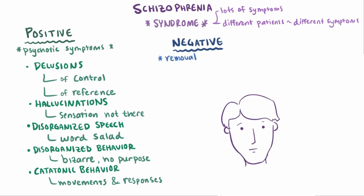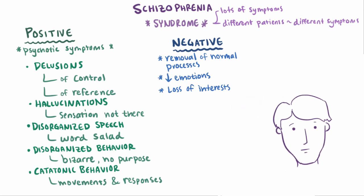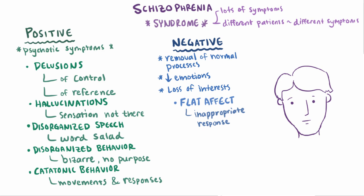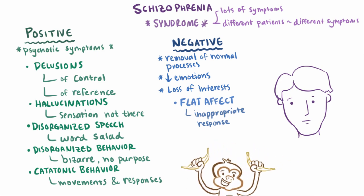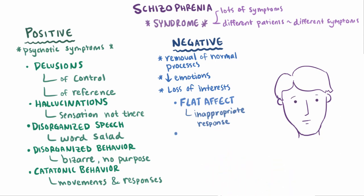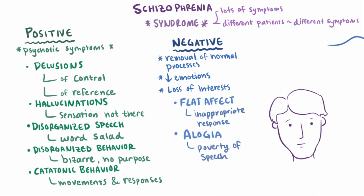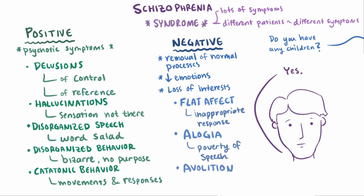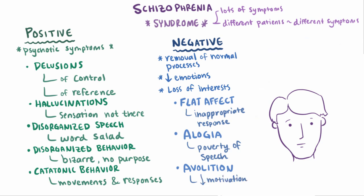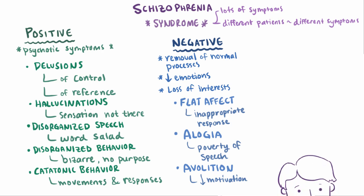Negative symptoms are a reduction or removal of normal processes, like a decrease in emotions they can express or a loss of interest in things they once found interesting. One type is flat affect, where they don't respond with an appropriate emotion — like seeing a small monkey in their living room and simply watching idly as if nothing was happening. Another type is alogia, or poverty of speech, a lack of content in their speech — responding with just 'yes' instead of 'yeah, one boy and two girls.' A third type is avolition, a decrease in motivation to complete goals, so someone might stay home for long periods without reaching out to friends or finding work.